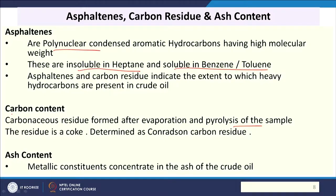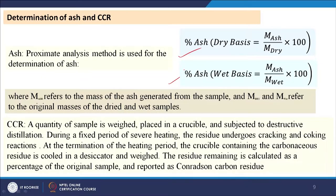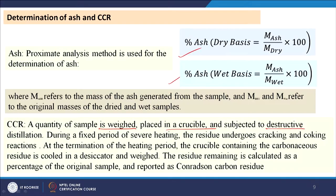Ash content can be measured from proximate analysis. Just like coal, ash content here is also related to mineral metals present in it. We can convert ash to dry basis and wet basis. For conradson carbon residue, we take a certain amount of material, place it in a crucible, and subject it to destructive distillation during a fixed period by severe heating. The residue collected is the conradson carbon residue, expressed as a percentage of the original sample.